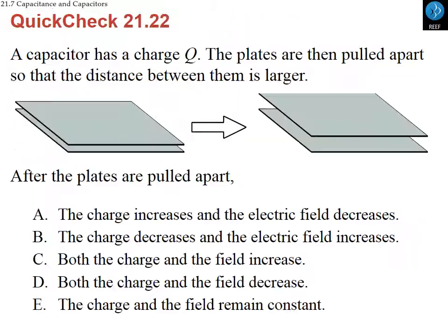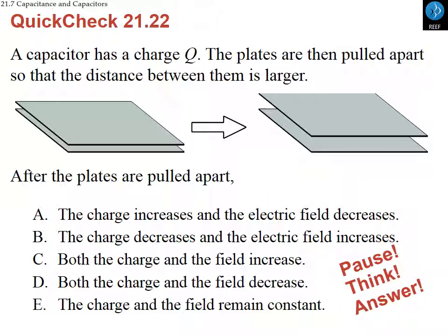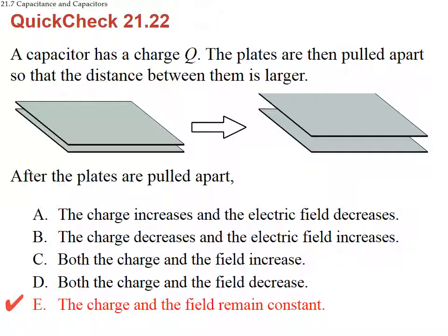Here is another example: a capacitor has charge Q and minus Q on its plates, and then the plates are separated. What happens? The electric field is given by the charge divided by epsilon zero times the area — the distance has nothing to do with the field, so the field stays constant. Because the field is given by the charge, if the field is constant then the charge is also going to be constant.